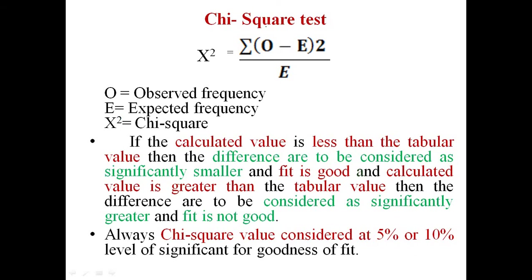Now let's go to the formula. Chi-square is denoted by the letter chi — this is nothing but the letter X. The formula is: summation of (O minus E) squared divided by E, where O is the observed frequency and E is the expected frequency. It is a very simple formula.